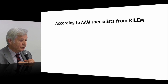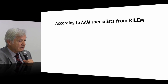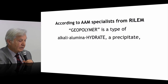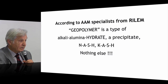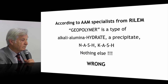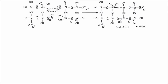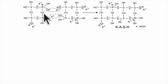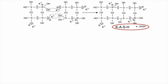So, according to alkali-activated materials cement scientists, geopolymer is the type of alkali aluminosilicate hydrate — N-A-S-H, C-A-S-H — nothing else. It is wrong. Geopolymer results from polycondensation of well-defined monomers, like this one: SIL321. This is the polycyclic disiloxyl cycle that polycondenses and builds the first ribbon oligomer — it is a small molecule.